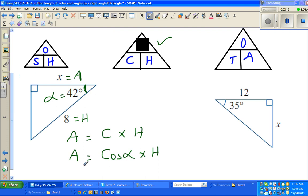So A would become C stands for cos alpha, in this case, times hypotenuse. So let us substitute or calculate, which is X is equal to cos 42 times hypotenuse is 8.